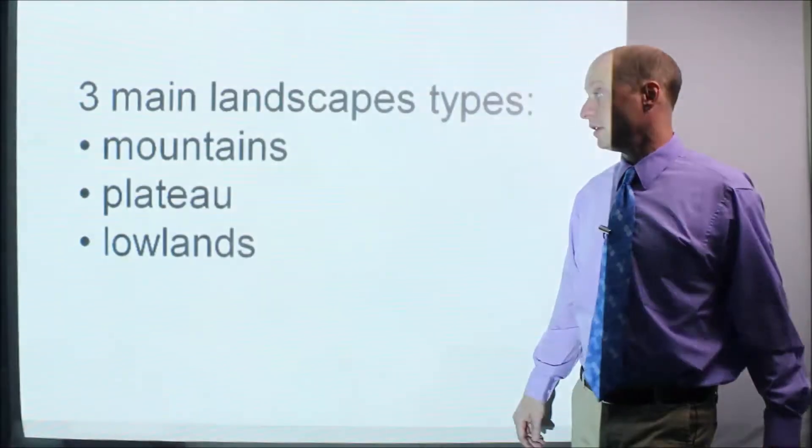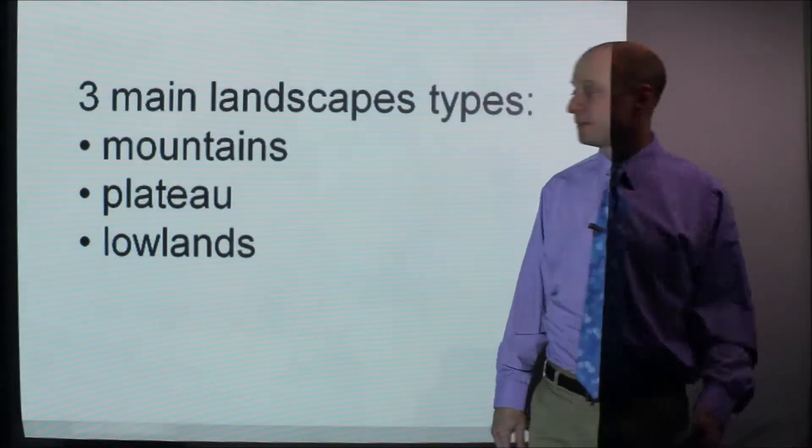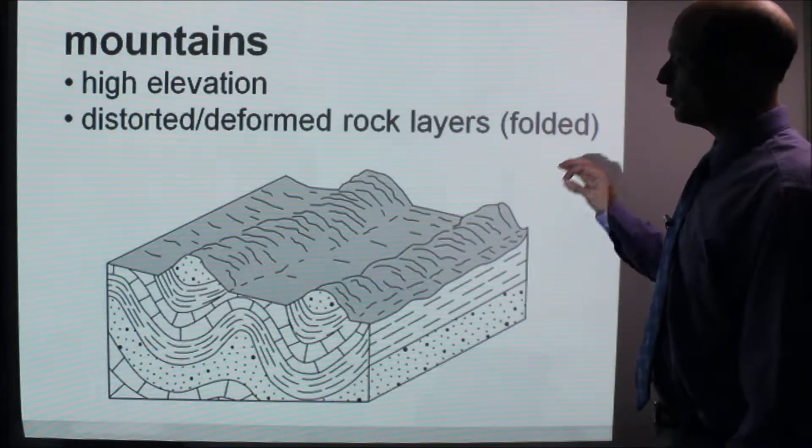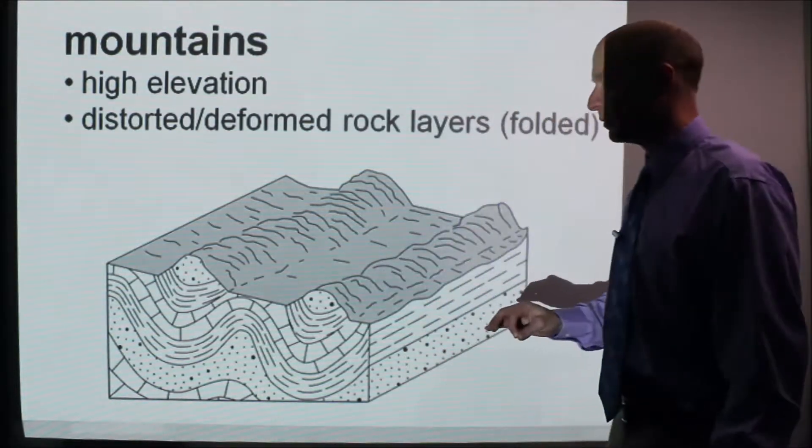Landscape types. The three main landscape types are mountains, plateaus, and lowlands. So it's really mountains and plateaus. Understanding how they differ is really the most important part.